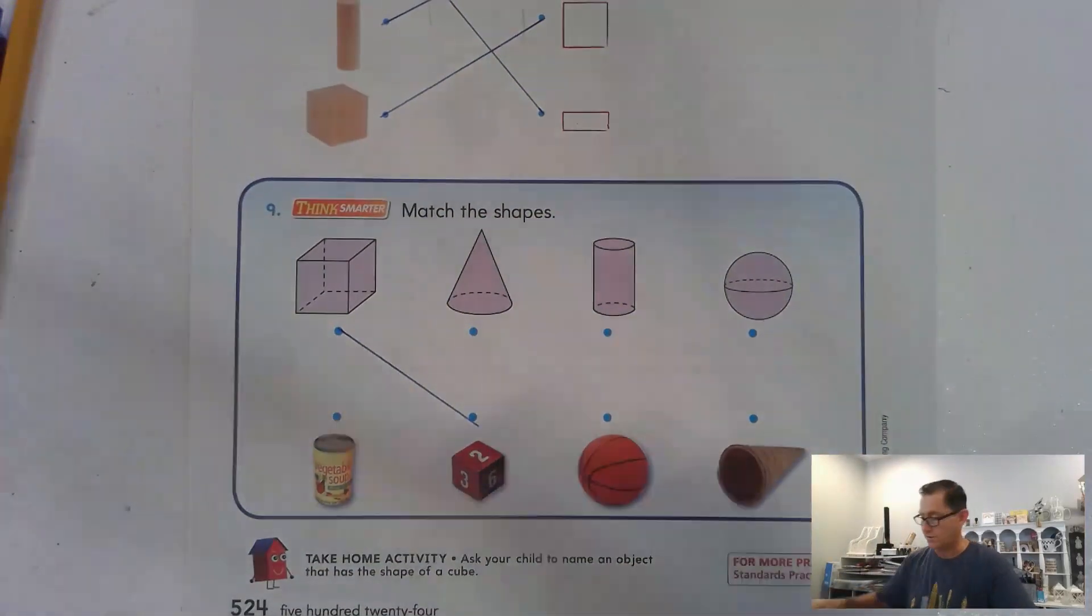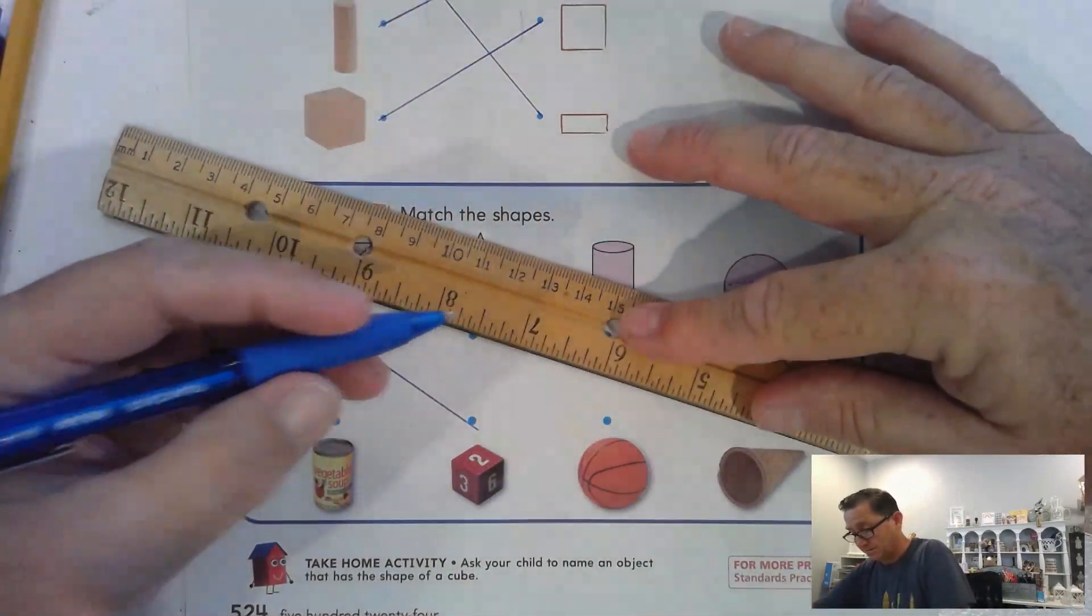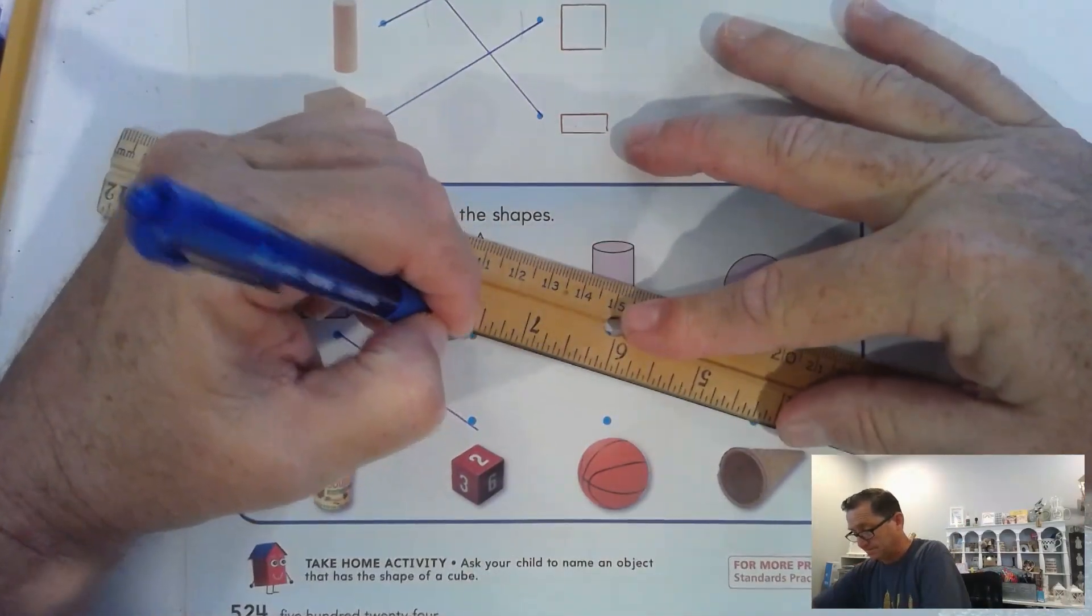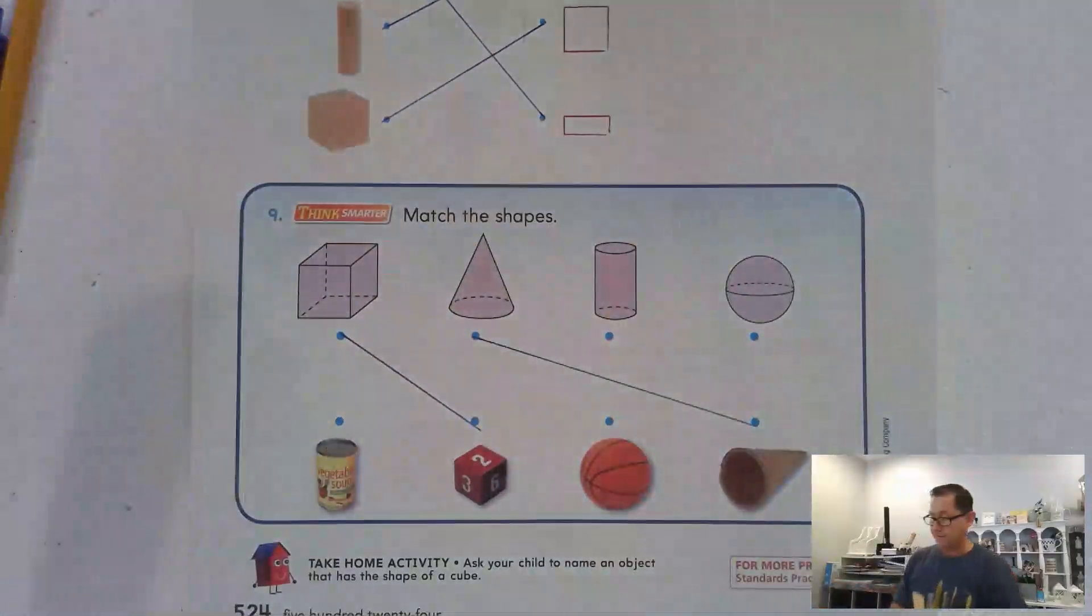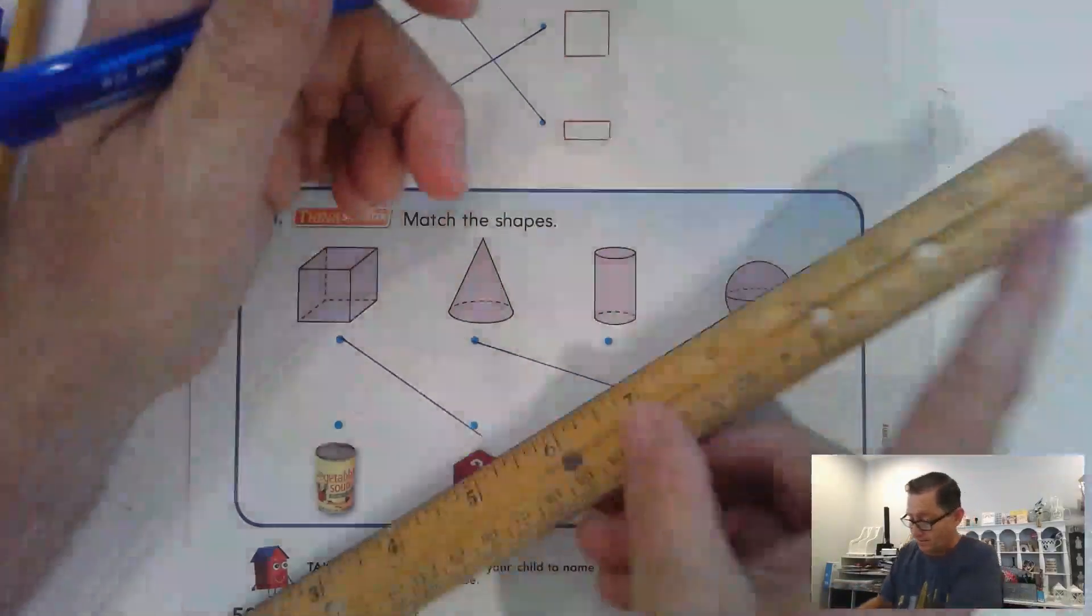Which one's a cone? The ice cream cone. The cylinder. That's the soup can.